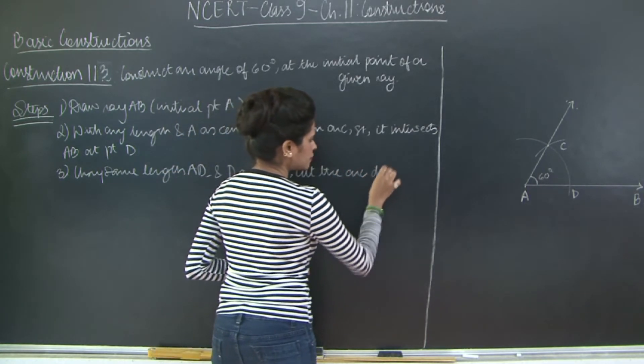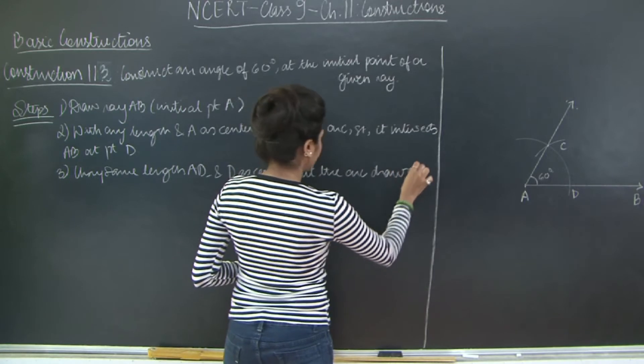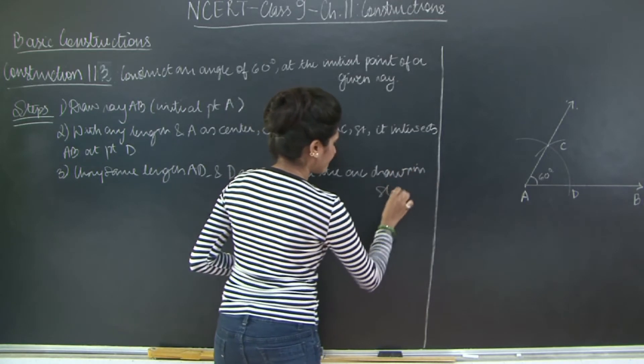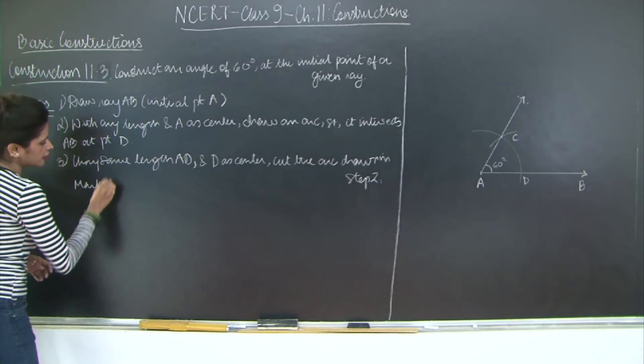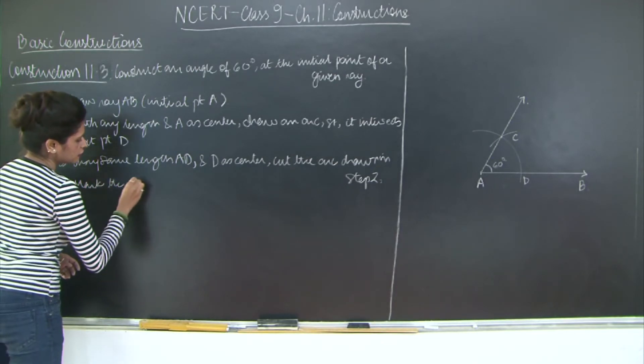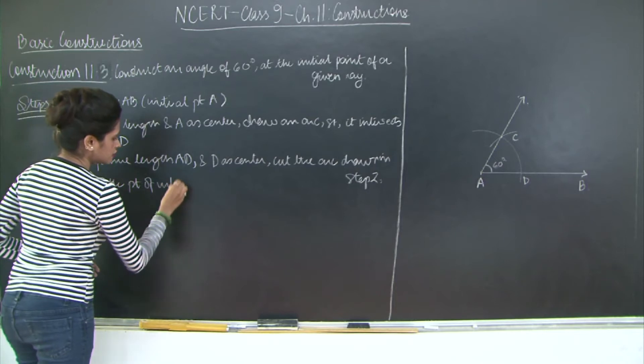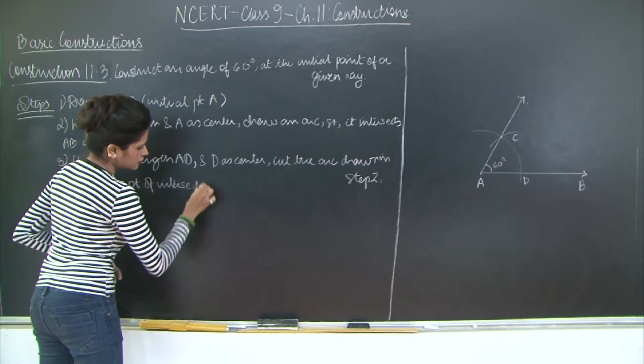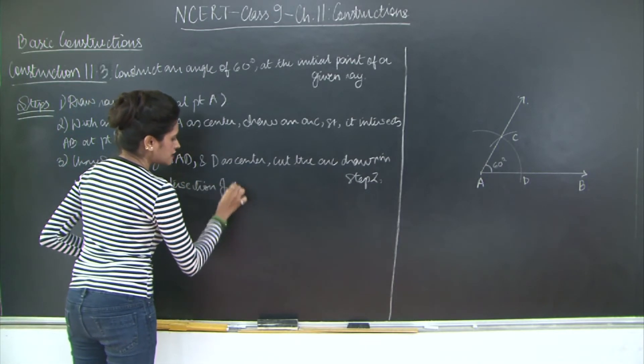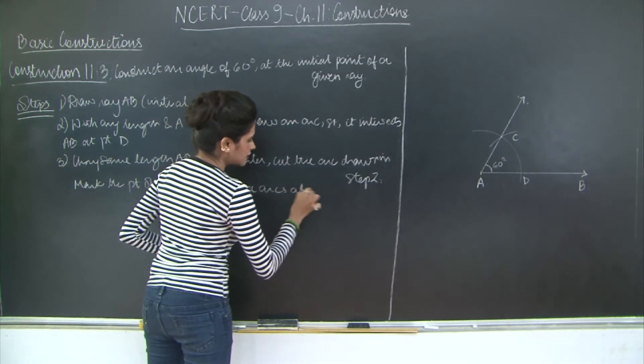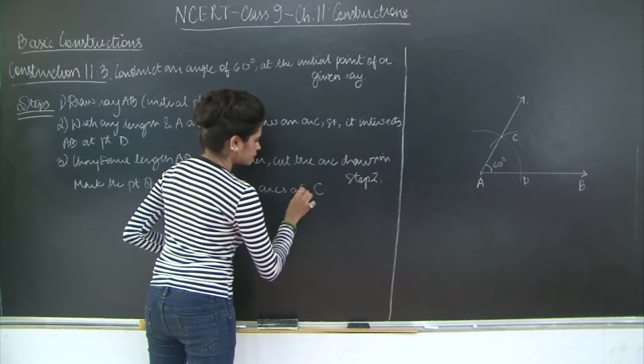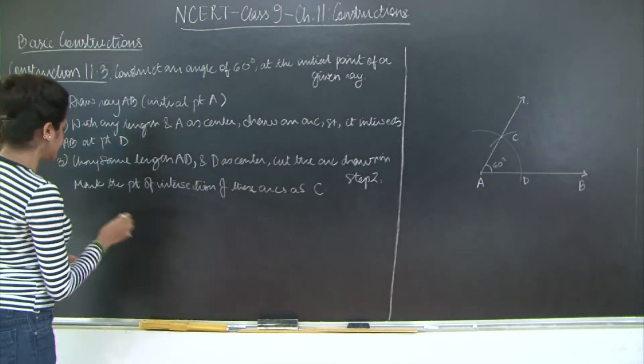Using same length AD and D as center, cut the arc drawn in step 2. Then mark the point of intersection of these arcs as C, then draw AC.